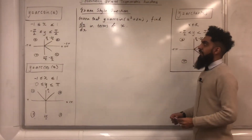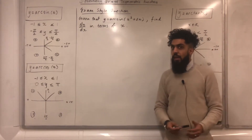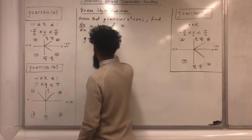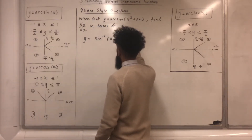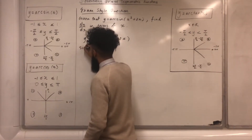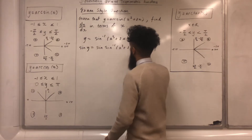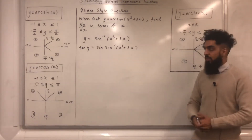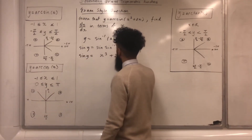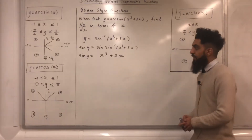Here's an exam style question. Given that y equals arc sine of x cubed plus 2x, find dy/dx in terms of x. The first step is to rewrite this as y equals sin inverse of x cubed plus 2x. The second step is to apply sin on both sides, giving sin y equals sin of sin inverse of x cubed plus 2x. Since sin and sin inverse cancel, we get sin y equals x cubed plus 2x.